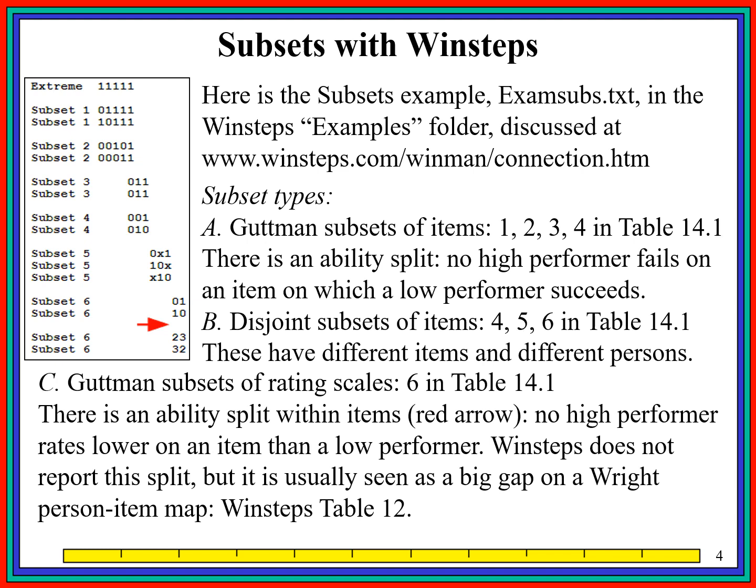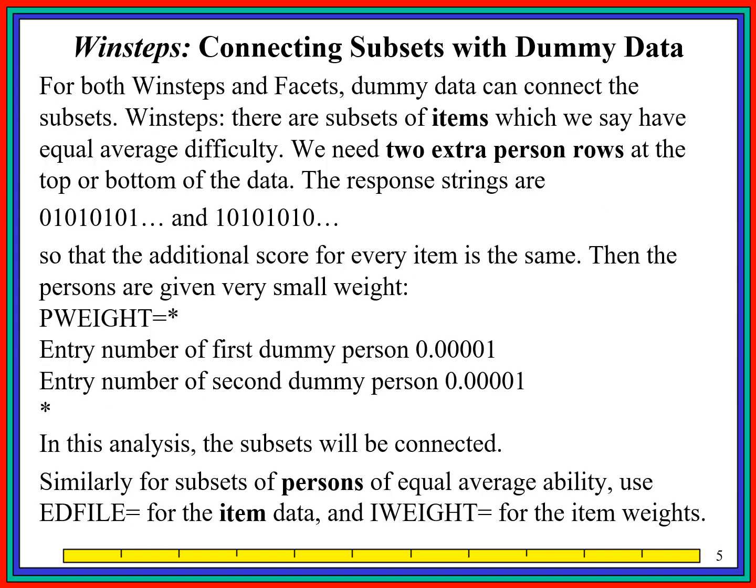The issue in all these cases is that WinSteps and FACETS always report numbers, but the numbers aren't comparable. How do we get around this problem? One method is to use dummy data. We add additional persons, items, or raters to the data set, give them very small weight, and use them to connect up the real data.